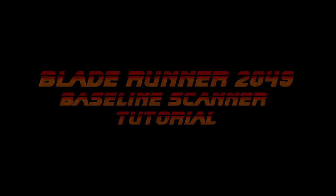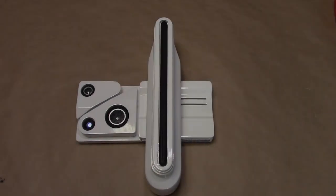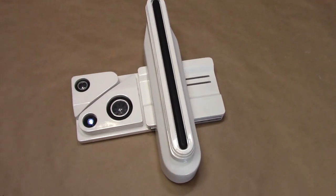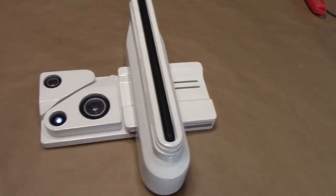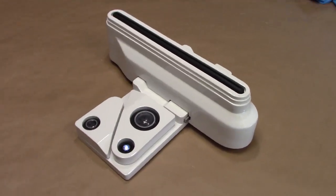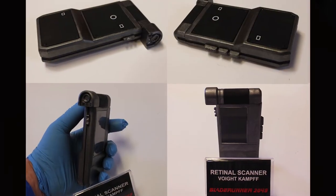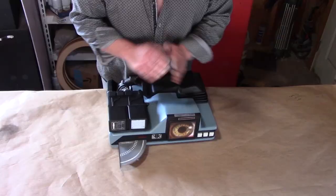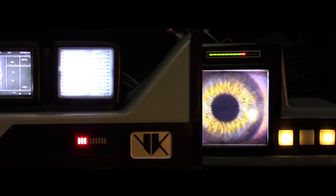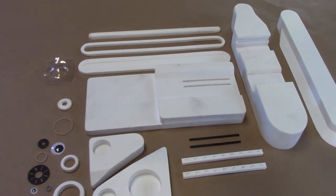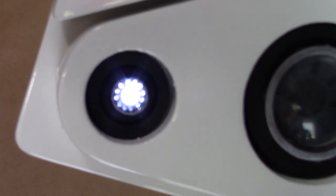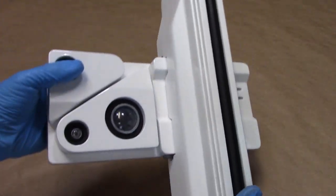Welcome to the Blade Runner 2049 baseline scanner kit tutorial. If you enjoy this content, have a look through the links provided in the description to visit the other Blade Runner replicas, the hand scanner, and the classic Voigt-Kampff machine. In this tutorial we're taking this set of kit parts and building them into a fully completed wall-ready museum display piece.